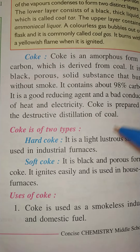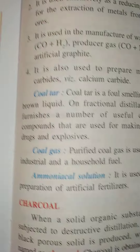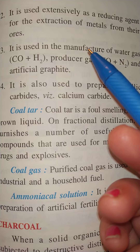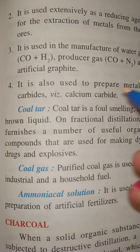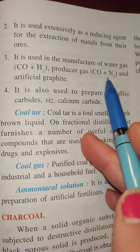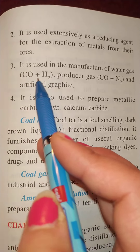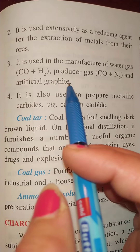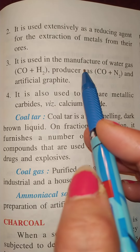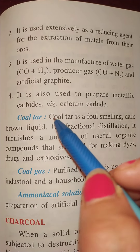Some uses of coke: Coke is used as a smokeless industrial and domestic fuel. It is also used as a reducing agent for the extraction of metals from their ores. It is used in the manufacture of water gas, which is a mixture of carbon monoxide and hydrogen, and producer gas, which is a mixture of carbon monoxide and nitrogen. It is also used for the manufacture of artificial graphite.